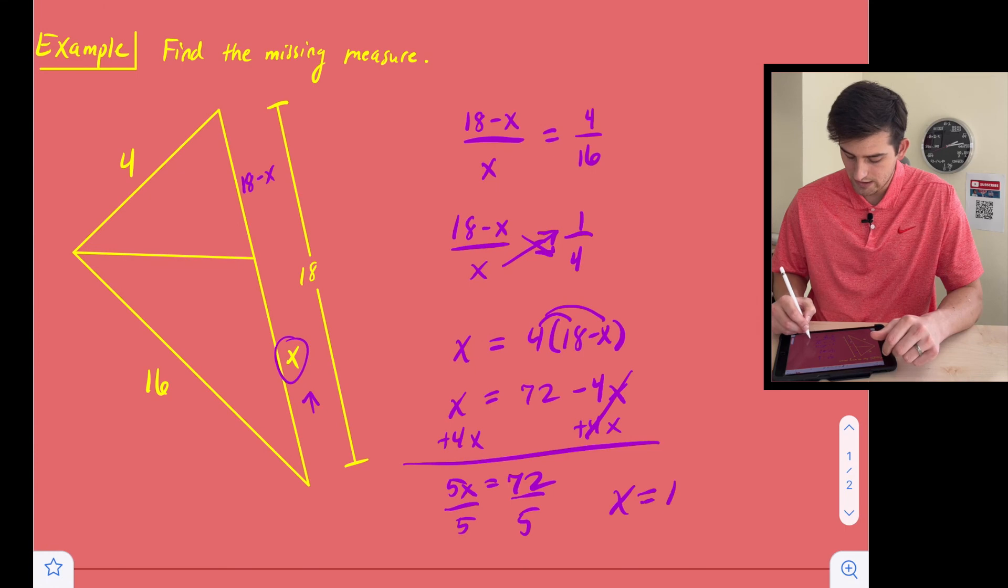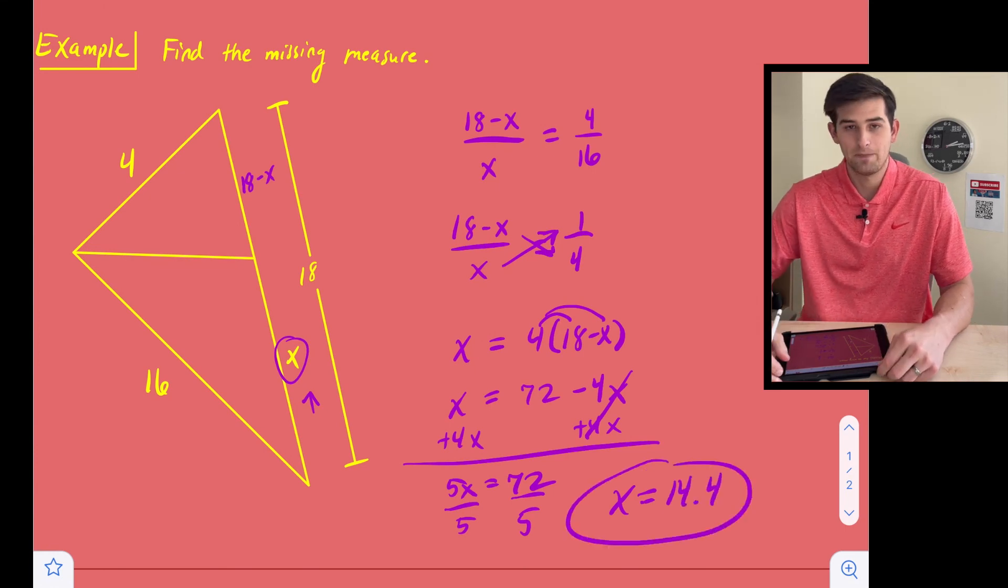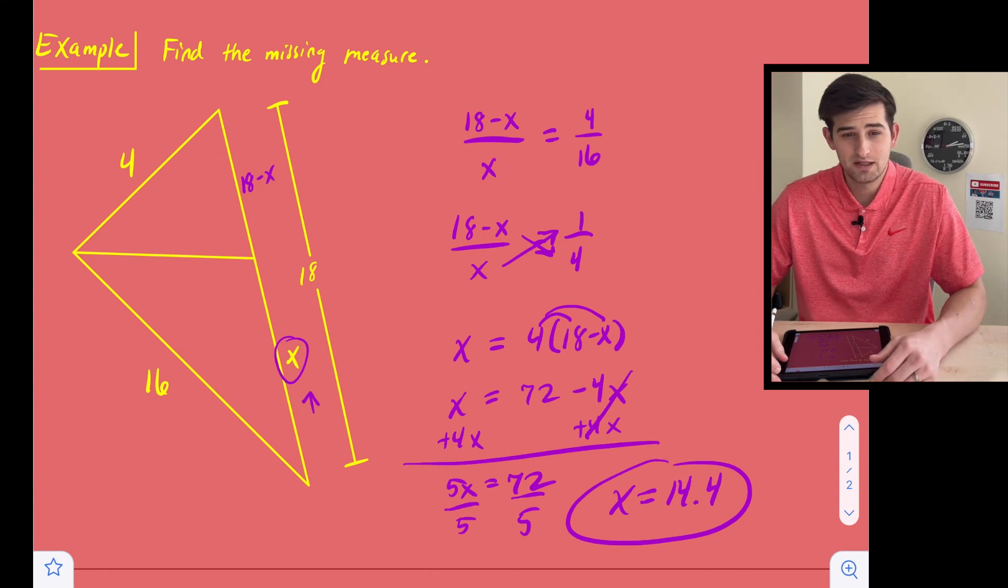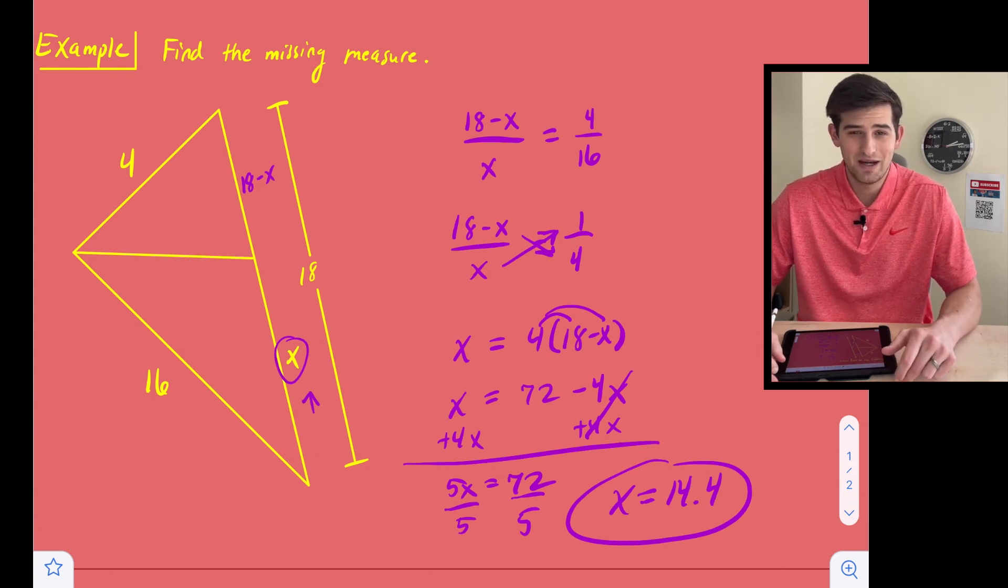And once we do that, we're going to see that X is equal to 14.4. Okay. And that's how you solve for missing side links using the triangle angle bisector theorem.